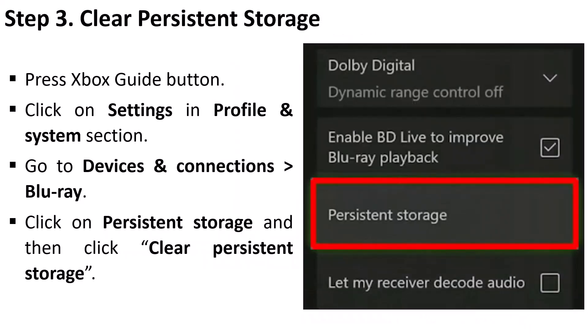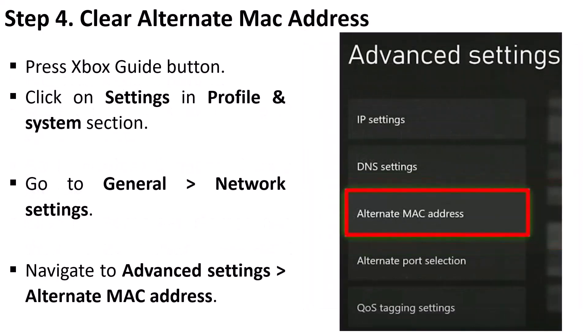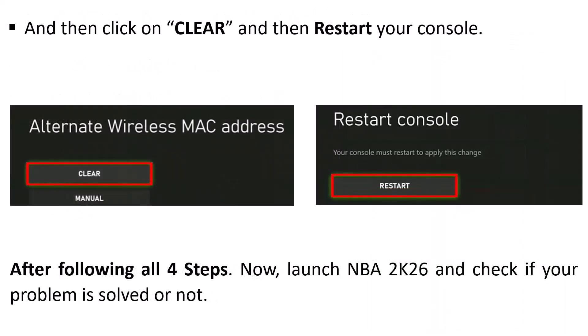Step 3 is to clear persistent storage. Press the Xbox guide button, click on Settings in the Profile and System section, go to Devices and Connections, then Blu-ray, click on Persistent Storage, and then click Clear Persistent Storage. Step 4 is to clear the alternate MAC address. Press the Xbox guide button, go to Settings, go to General, then Network Settings, navigate to Advanced Settings, select Alternate MAC Address, click on Clear, and then restart your console. After following all four steps, launch NBA 2K26 and check if your problem is solved.